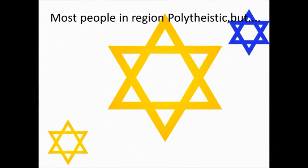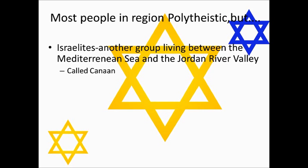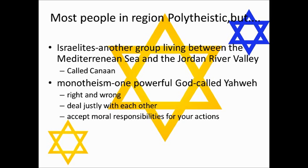The last group we have to talk about is probably one of the most important. Remember that most people in this region were polytheistic. But there was another group called the Israelites, who settled in an area between the Mediterranean Sea and the Jordan River Valley — they called this land Canaan. Here's the big difference: they were monotheistic. They believed in one powerful god called Yahweh, and their god expected them to know the difference between right and wrong, to treat each other fairly, and to accept moral responsibility for their own actions. This is a big shift, because the other religions up till now were polytheistic and based in nature.